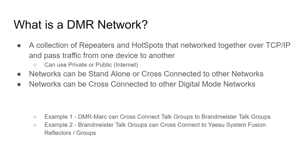What is a DMR network? The most basic definition is a collection of repeaters and hotspots that are networked together over TCP/IP. These devices pass traffic from one to another, and you can do this on a private network or over the public Internet. Networks can be standalone or cross-connected to other networks — and even to other digital mode networks. For example, a DMR-MARC repeater can cross-connect to talk groups on Brandmeister. DMR-MARC is a network; Brandmeister is a network.